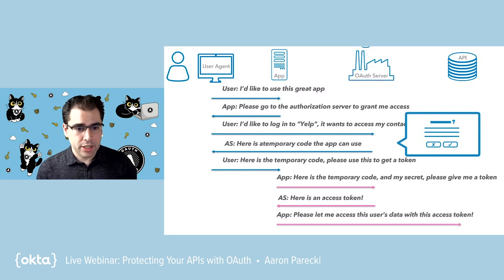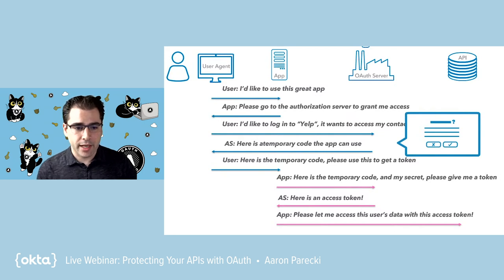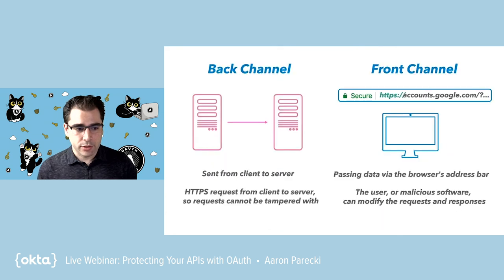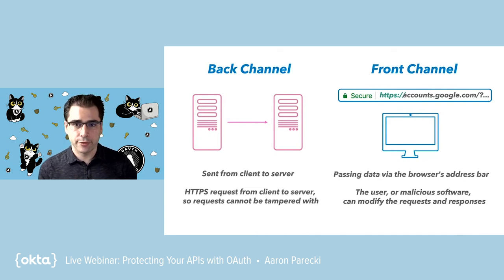You might notice there are two different colors of lines here, because there's a very important difference between the two parts of this flow. The first half — the blue lines — everything is always running through the user's browser, which we call the front channel. Whereas in the second part of the flow, that's actually the app's web server talking directly to the OAuth server over the back channel, shown in pink. The back channel is the normal thing you're probably very familiar with — an HTTP client talking to a server, connection encrypted, and so on. Front channel is actually the idea that you are using the user's address bar to move data from one place to another.